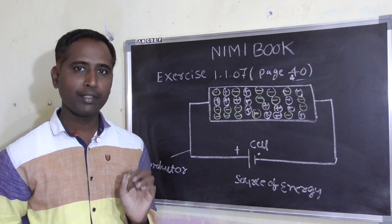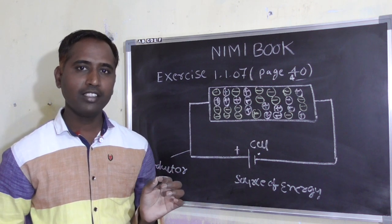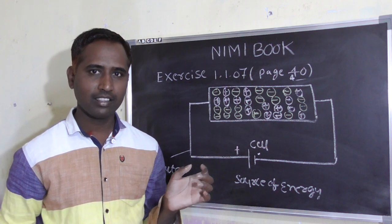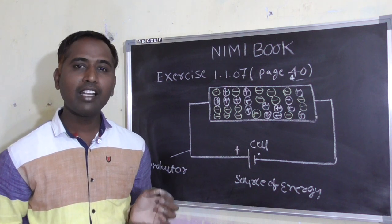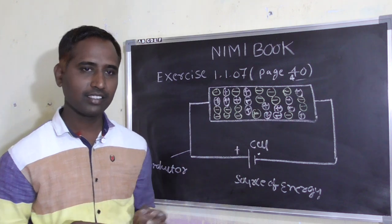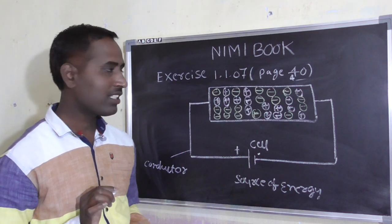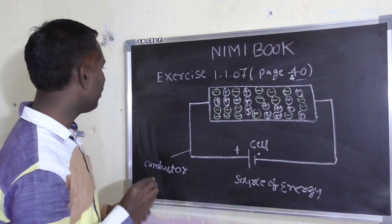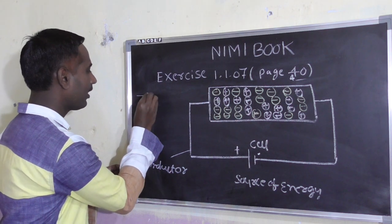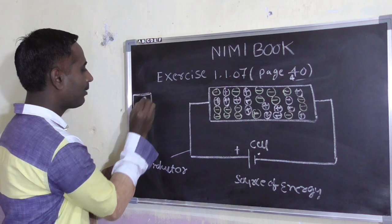Okay, one law is there — magnet ka law. First law is: like poles repel each other, and unlike poles attract each other. Law of repulsion — suppose you take a magnet, it has a north pole and a south pole.